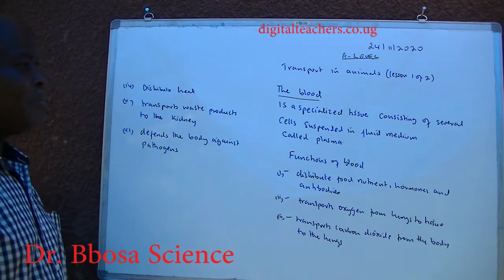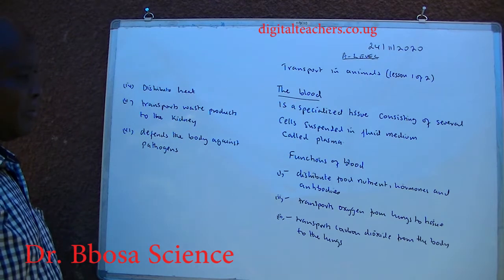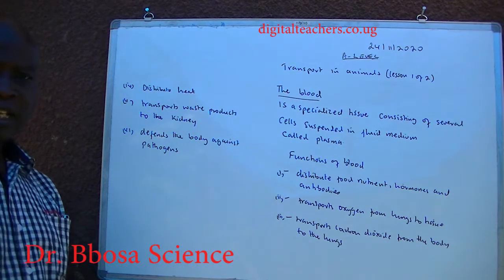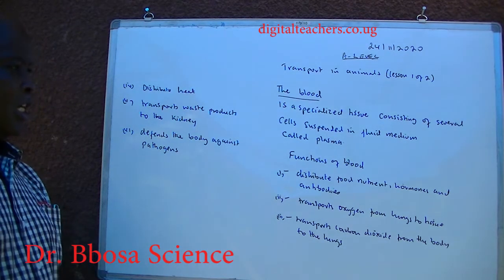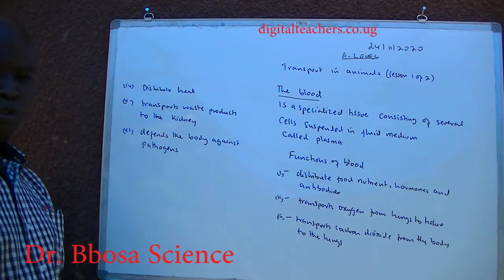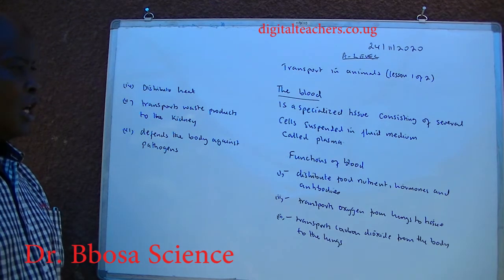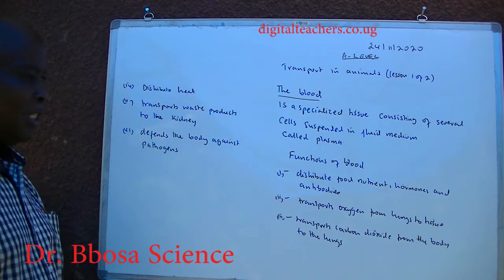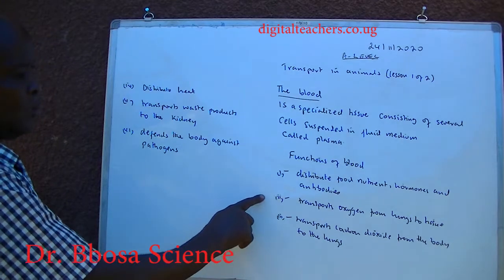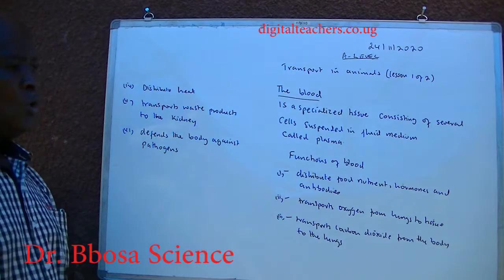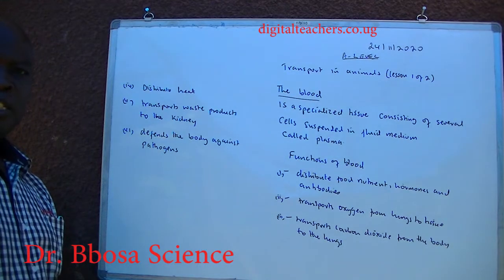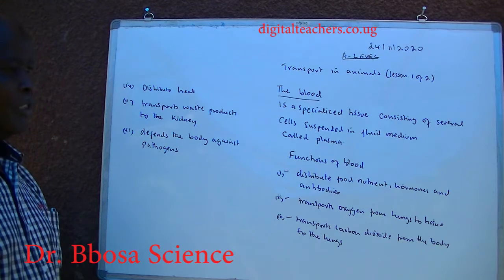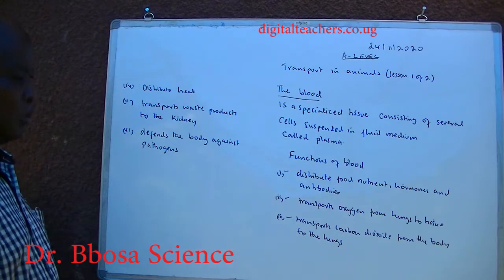Blood is a specialized tissue consisting of several cells suspended in a fluid medium called plasma. Functions of blood: 1. distributes food, nutrients, hormones and antibodies. 2. transports oxygen from lungs to tissue.